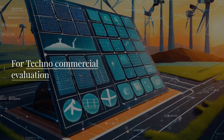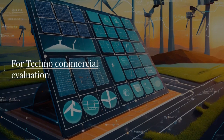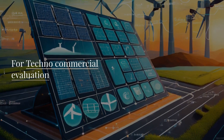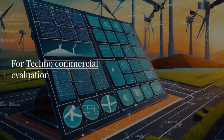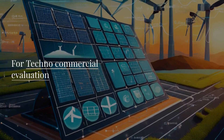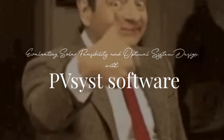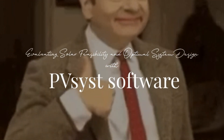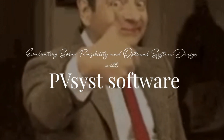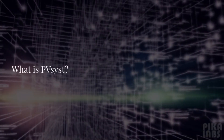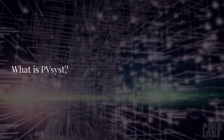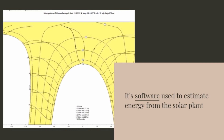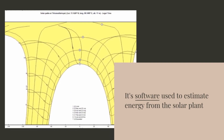PVsyst is used to determine whether a solar installation in a specified area is feasible or not. That solution can be provided to the owner using PVsyst software. PVsyst is software used to estimate energy output from a solar plant.